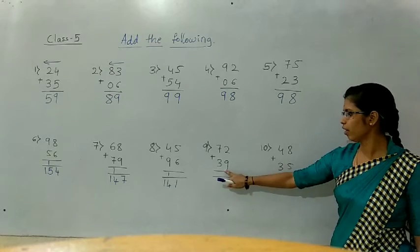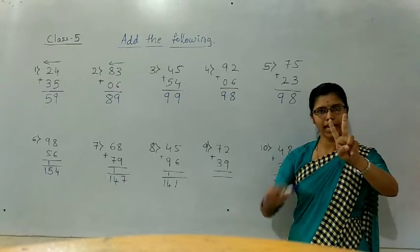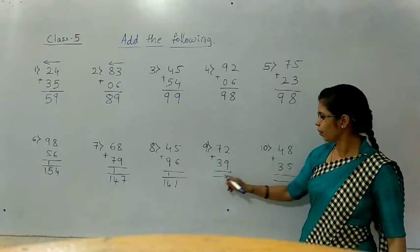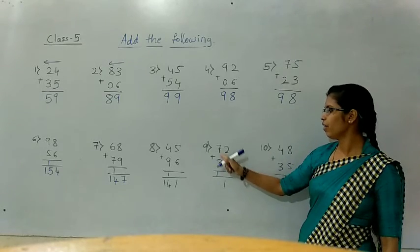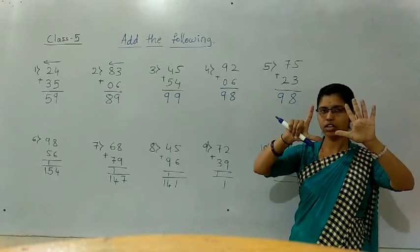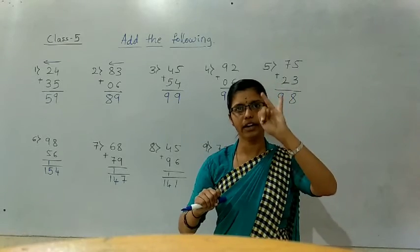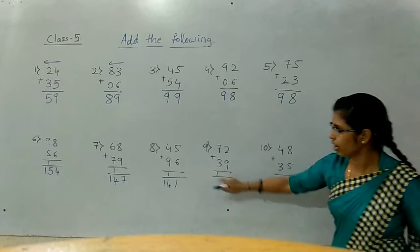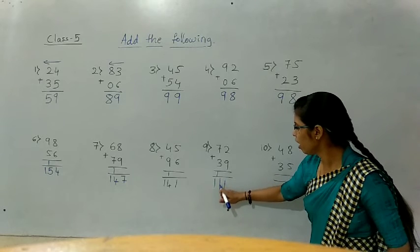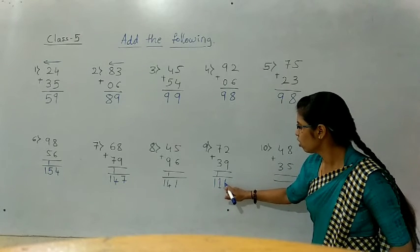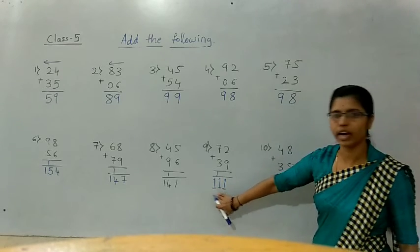Next one: 2 plus 9. Hold 2 fingers. Below number is 9. After 9: ten, eleven. Write 1 here and 1 here — that is 11. Then add 7 plus 3 — hold 7 fingers. After 3: four, five, six, seven, eight, nine, ten. Plus carry 1 — that is 10 plus 1 equals 11. How much? 11. If we add 72 and 39, we get 111.